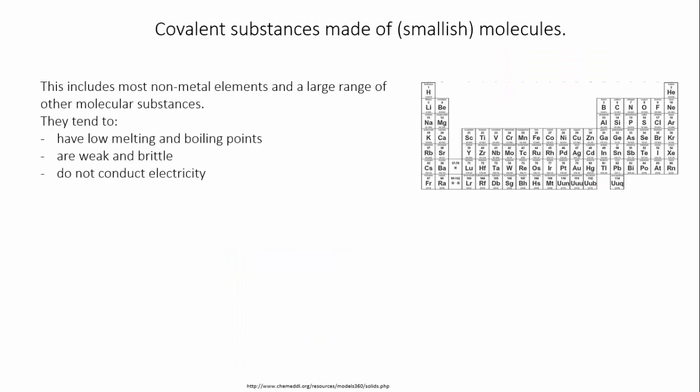However, if we specifically consider covalent substances that are made of relatively small molecules, then we can identify some general properties. This includes the non-metal elements which all form molecules, except the noble gases which are single atoms. They tend to have low melting and boiling points. They tend to be weak and brittle when they're solids. They don't conduct electricity.